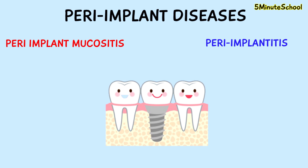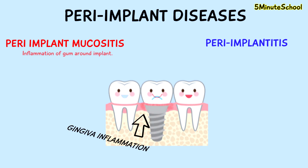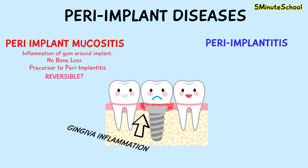Peri-implant mucositis is where we have inflammation of the gum around the implant and there's no sign of bone loss. Usually peri-implant mucositis is a precursor to peri-implantitis, and some studies suggest that if it's treated early, it can be reversible.